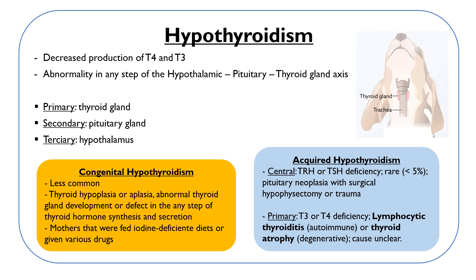Congenital hypothyroidism can develop in puppies with mothers that were fed an iodine-deficient diet or mothers given various drugs. Acquired hypothyroidism can be central — a TRH or TSH deficiency — or primary, involving T3 or T4 deficiency.